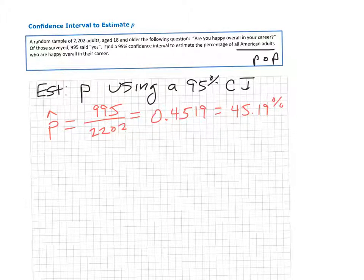Assuming this is a random sample from the population, 45% should be a good estimate as to what the true value of P, your population proportion, is.